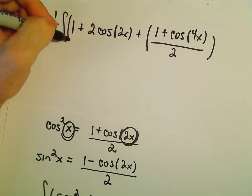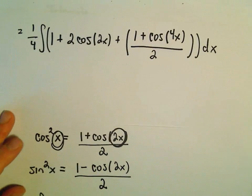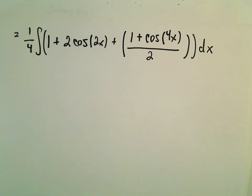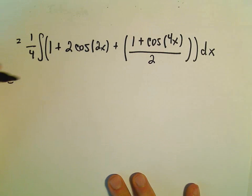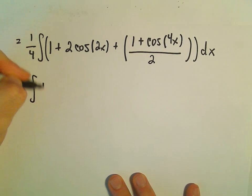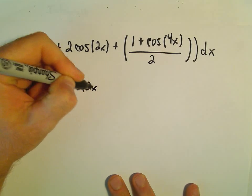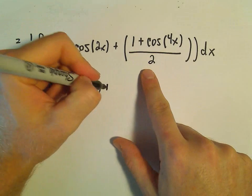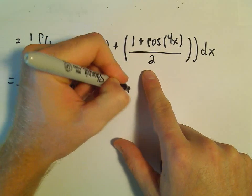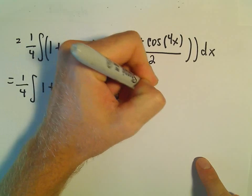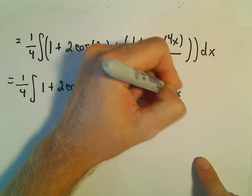So now, still cleaning it up. So this is 1 fourth. We've got 1 plus 2 cosine of 2x. If we break this up, we would have a plus 1 half. And then we would have plus 1 half cosine of 4x.